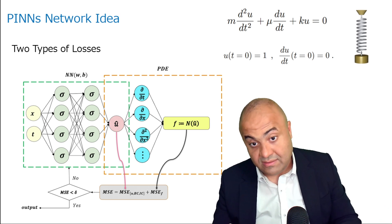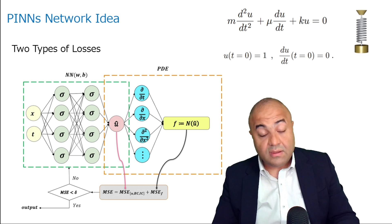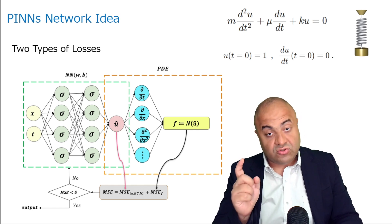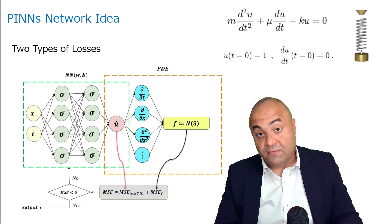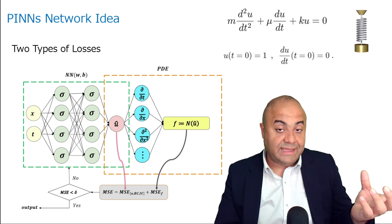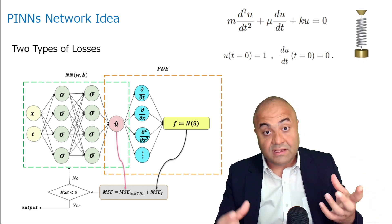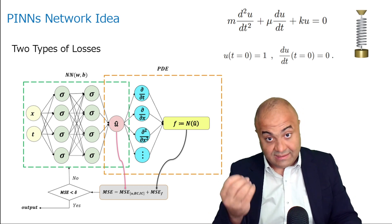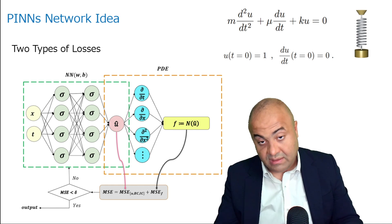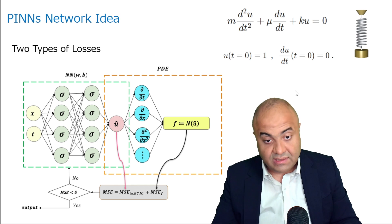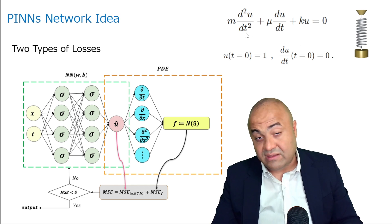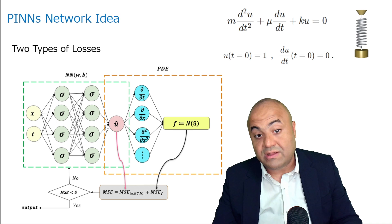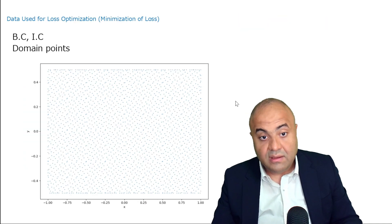Note that if we train the network for only one case, it will be able to solve our problem for only that one case. If we train it for general cases, then the network can solve general cases. This is how neural networks can solve problems very fast — because it's trained extensively and can solve quickly by simply passing through the feed-forward neural network to get the final value.